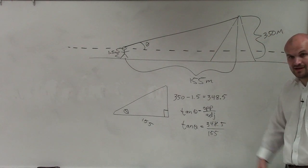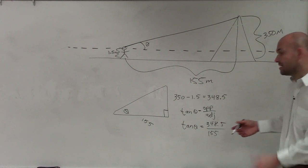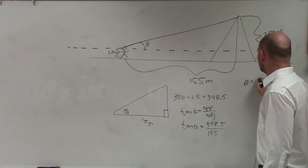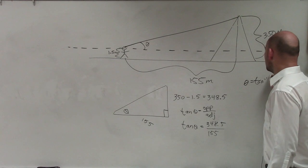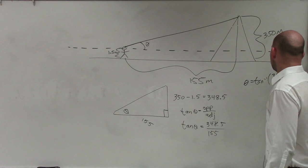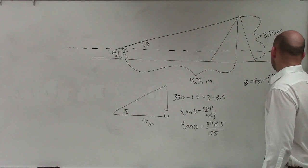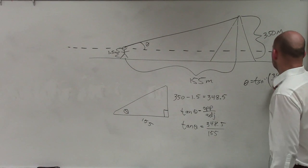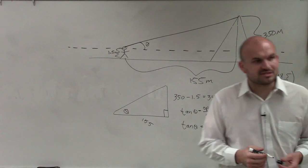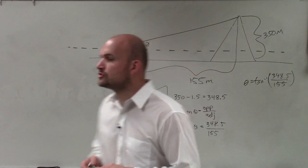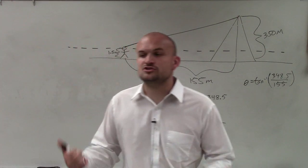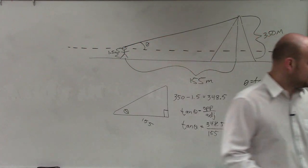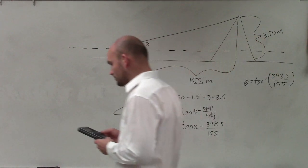So tangent of theta equals 348.5 divided by 155. All right, so now to find theta, we do like what we did in the other homework assignment. Theta equals tan inverse of 348.5 divided by 155. So guys, these problems are pretty much the same thing. The hard part is going to be drawing the picture and drawing the triangle that you need. But now, the nice thing is we just let the calculator do the work.